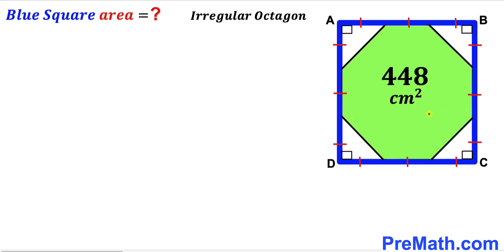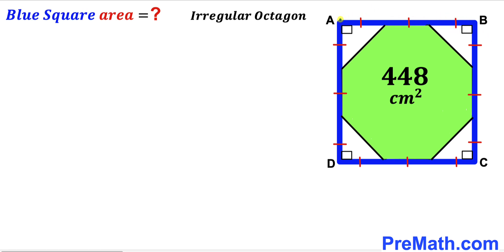Welcome to Premath. In this video we have a green shaded eight-sided polygon fully inscribed in a blue square ABCD, as shown in the diagram, such that the area of this green shaded region has been given to us as 448 cm². Moreover, all the sides of this blue square have been divided into three equal segments.